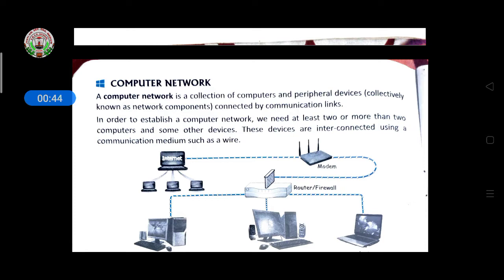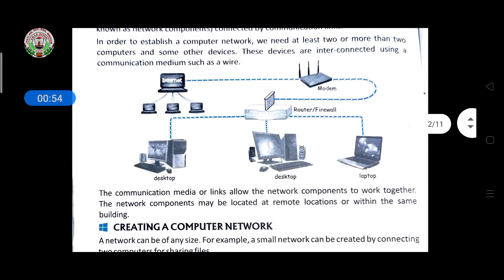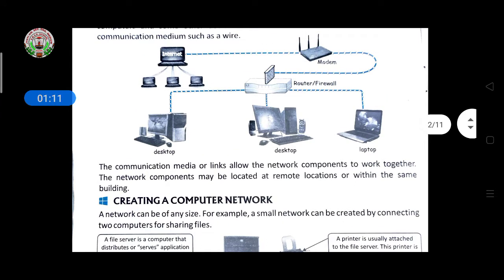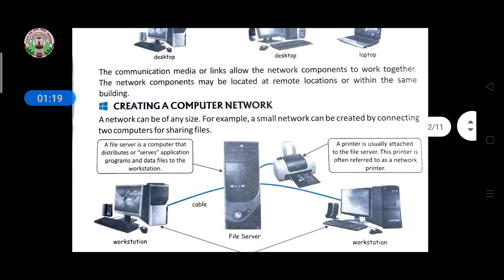These network components are connected by communication links. To establish this we need at least two or more computers and some other devices. As shown in the picture, desktop computers and laptops are connected to one router, firewall, and modem. We connect them because we want an internet connection, which connects all the systems together and makes it easy to communicate with each other.